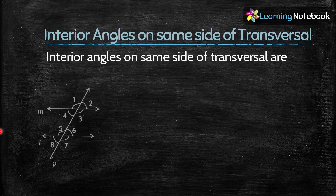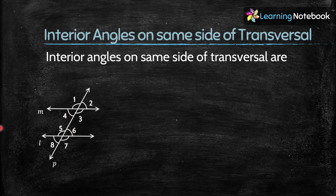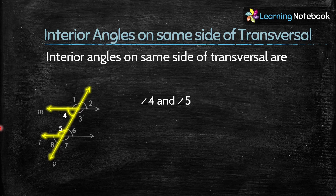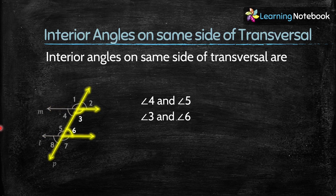The interior angles are 3, 4, 5, and 6. The angles which are on the same side of the transversal are angle 4 and angle 5. Another set of interior angles on the same side of the transversal are angle 3 and angle 6.